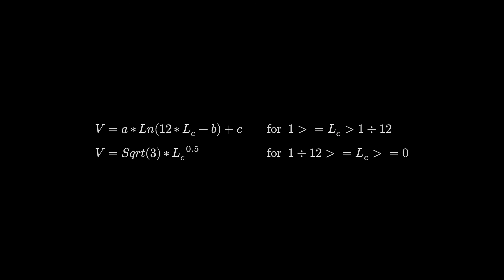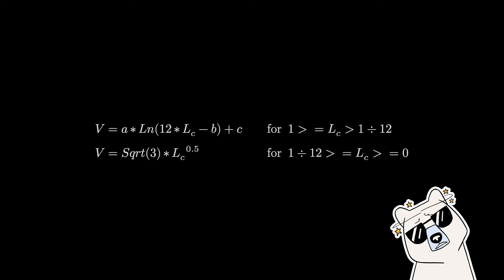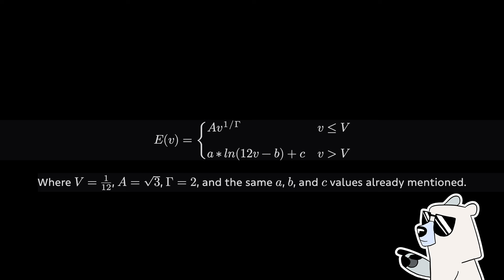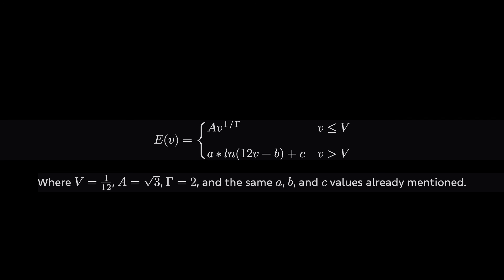The definition given in the spec is quite complex. Making it more readable: there's no linear segment. And the 12s appear because in spirit, lightness levels are no longer between 0 and 1 — they're between 0 and 12.